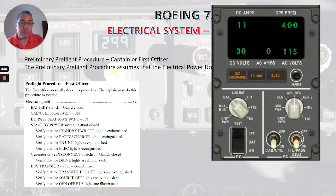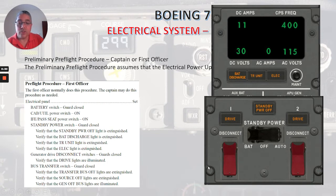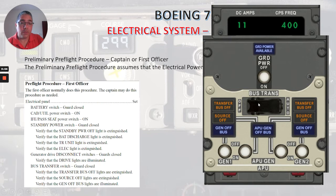IFE passenger seat power switch on. Standby power switch guard closed. Verify that the standby power off light is extinguished. Verify that the battery discharge light is extinguished. Verify that the TR unit light is extinguished, and verify that the LX light is extinguished. Generator drive disconnect switches guards closed — verify that the drive lights are illuminated. Bus transfer switch guard closed. Verify that the TR bus off lights are extinguished.